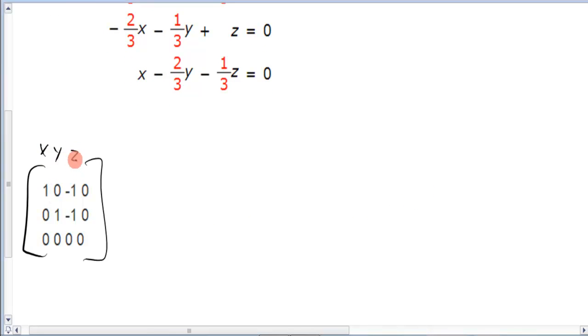First column is x, next column is y, third column is z, last column is equal sign. So this first row is saying to me x minus z equals zero. The next row after that is y minus z equals zero.